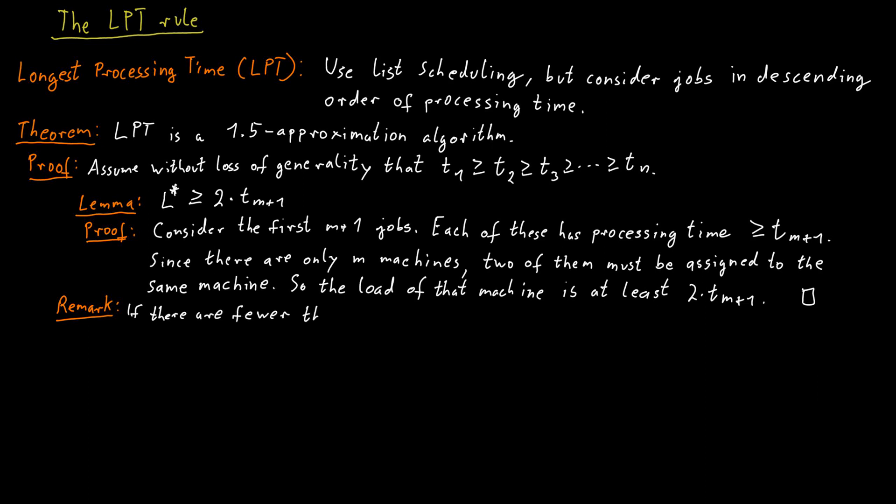So, if we have fewer than m jobs in total, then our algorithm is optimal anyway, because each job can just be placed on an individual machine, not having to share that machine with any other job.